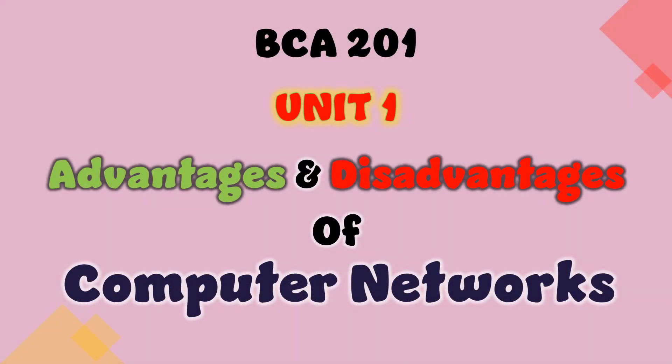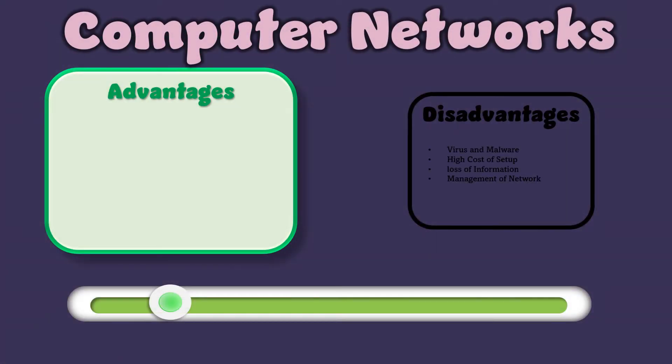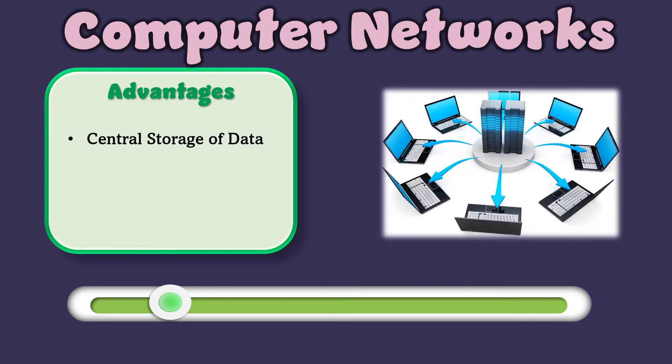BCA Unit 1: Advantages and Disadvantages of Computer Network. Some of the main advantages of computer networks are: Central storage of data — files are stored on a central storage database, which helps to easily access and is available to everyone.